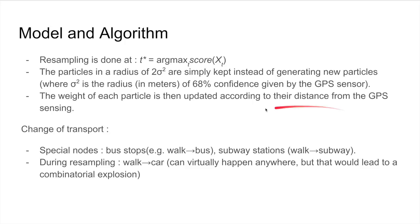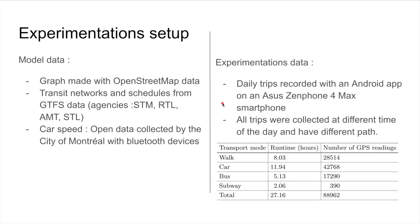When we do the resampling, the particles in a radius of two times the uncertainty of the GPS are simply kept instead of generating new particles. The weight of each particle is then updated according to its distance from the GPS sensing. To handle changes of transport mode, we can do that only at spatial nodes for everything that's transit-related, like bus stops or subway stations. For walk-to-car, which can happen virtually anywhere but which could lead to a combinatorial explosion, we only do this transition during the resampling.